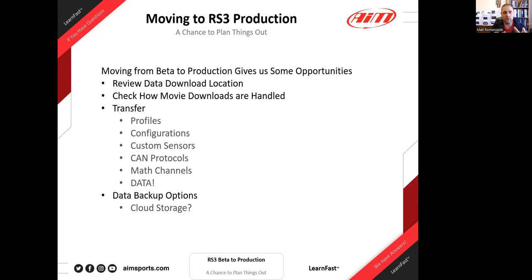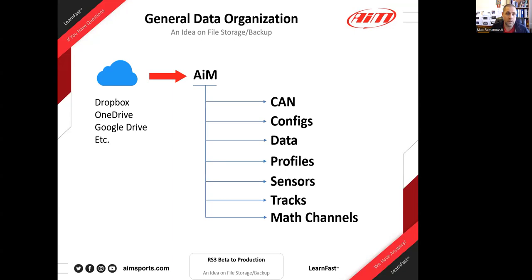As we move things over, let's review what we have and where to find it. Today we'll look at: where your data is located and where the beta put it, how movies are handled, and how to transfer settings from Race Studio 3 beta — profiles, configurations, custom sensors, CAN protocols, math channels, and data. This also gives us a chance to think about using cloud storage.